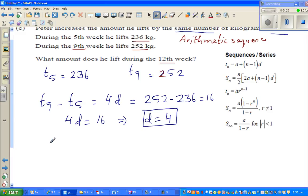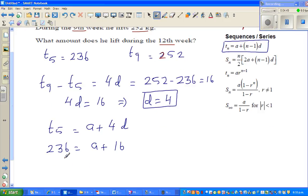Now, can I write t5 using this formula? T5 is a plus 5 minus 1, which is 4D. So t5 is 236 equals a plus 4D. 4D is 16. If you take away 16 from both sides, 220 is equal to a. So your first term, or t1, is 220. So a is 220 and D is 4.